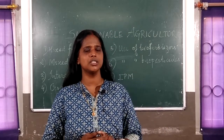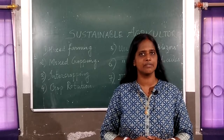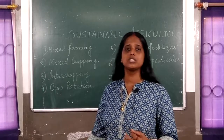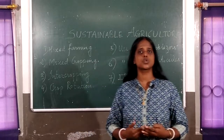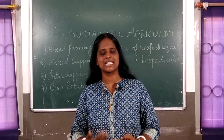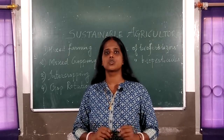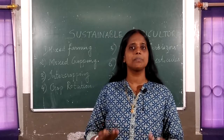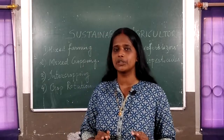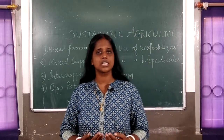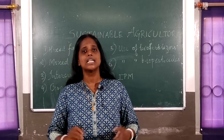So what do we mean by sustainable agriculture? It means an agricultural system that does not degrade the quality of the environment. The Food and Agricultural Organization defines sustainable agriculture as that kind of agriculture which tries to limit the use of fertilizers and pesticides. When we limit their use and depend more on natural commodities, and the system does not degrade soil quality, does not affect human health, and does not contaminate water bodies — that is sustainable agriculture.